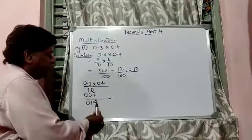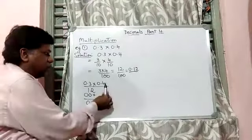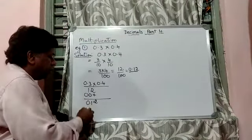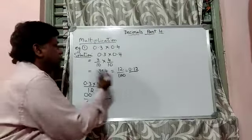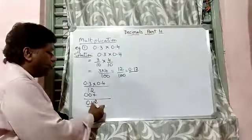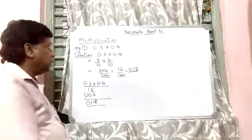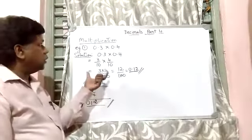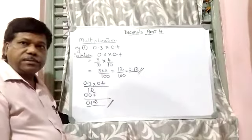So we count two digits because here 1, here 1. So totally 2. After two digits, put the point. So the answer is the same, 0.12. So this is the second method. So we can use both these methods to solve simple problems like this.